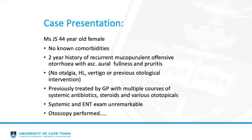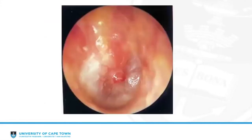Systemic and ENT exam was unremarkable apart from otoscopy, which revealed significant otorrhea and pus. This was microsuctioned, ultimately revealing the tympanic membrane, and a diagnosis of granular myringitis was made. The question was what to do next.